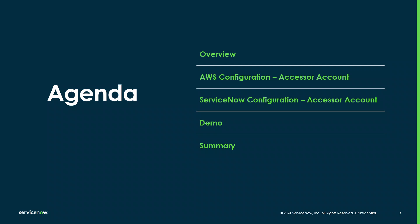The agenda for this session: we'll start with an overview of Assume Role and AWS organizations and the overall structure of how Assume Role works for cloud discovery. Then we'll get into the AWS configuration for the accessor account, followed by the ServiceNow configuration for the accessor account, a demo from start to finish, and then a summary.